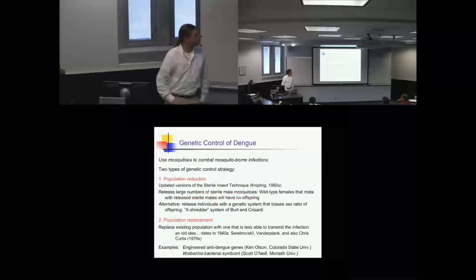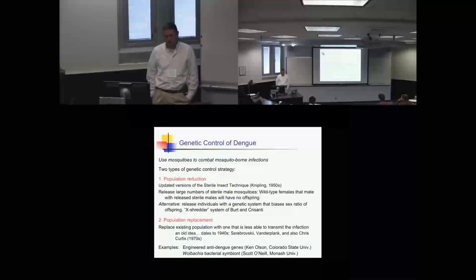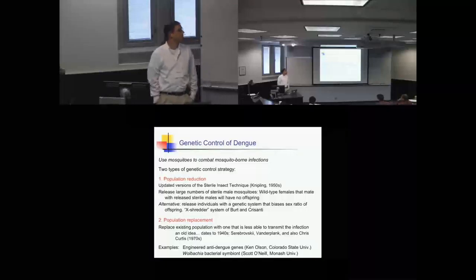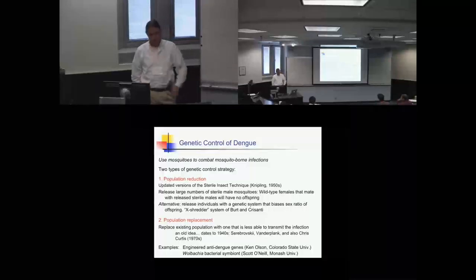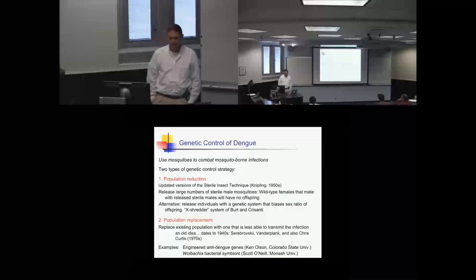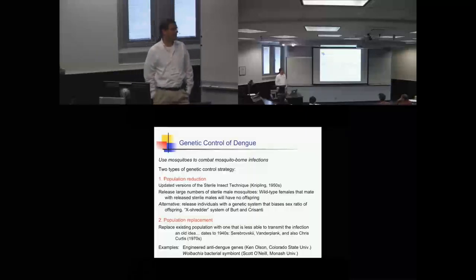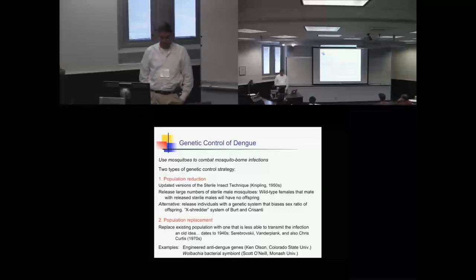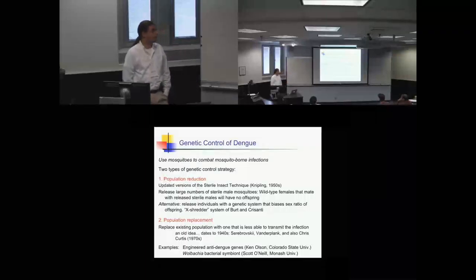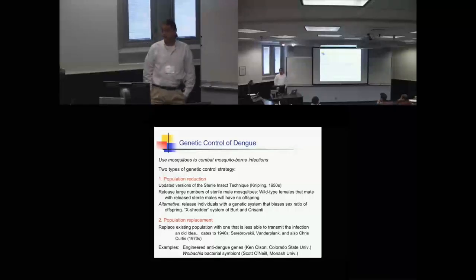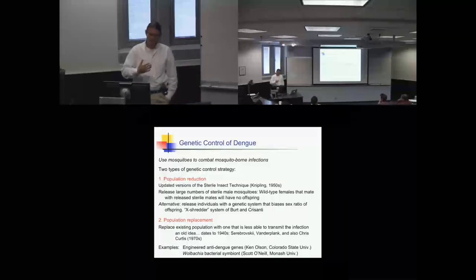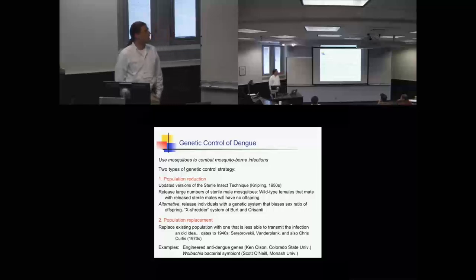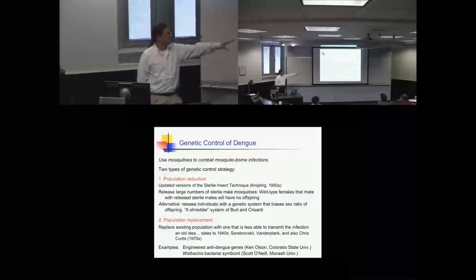So it's been recognized there's a need for alternative approaches. One quite large category are genetic control methods, using mosquitoes to combat mosquito-borne disease. This first one, population reduction, is the one that we've been hearing about in the press. This is basically an updated version of the sterile insect technique that was introduced in the 1950s to combat certain agricultural pests. The idea is you release large numbers of sterile male mosquitoes. The wild-type females that mate with those sterile males won't have offspring, and so the numbers of mosquitoes will decrease over time.